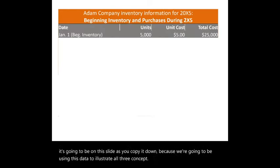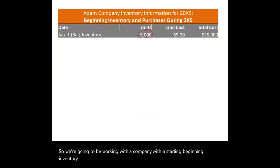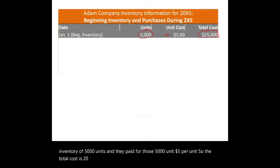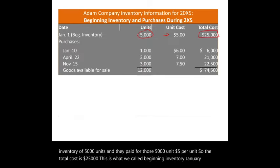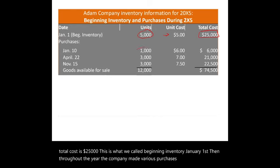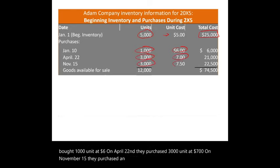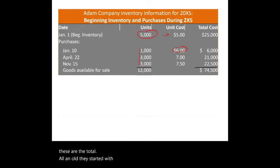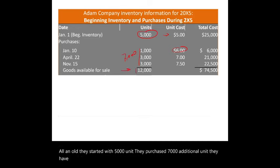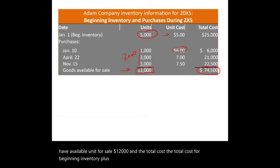We'll work with a company with beginning inventory of 5,000 units at $5 per unit, totaling $25,000 on January 1st. Throughout the year, the company made various purchases: January 10th — 1,000 units at $6; April 22nd — 3,000 units at $7; November 15th — 3,000 units at $7.50. In total, they started with 5,000 units, purchased 7,000 additional units, giving 12,000 units available for sale.